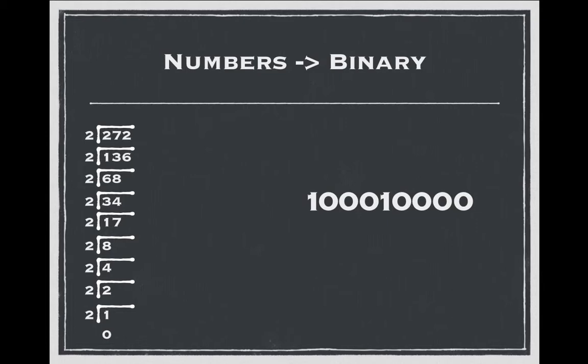So now you're probably looking at this number 100010000, like okay, well how do I know for sure this number represents the number 272? Well, by convention, the far rightmost side position holds the value 2 to the 0 power, which ultimately equates to the numeric value 1, because 2 to the 0 power is 1.